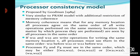The next consistency model is the processor consistency model, proposed by Goodman in 1989. It is very similar to the PRAM model, with the additional restriction of memory coherence. Memory coherence means that for any memory location, all processes agree on the same order of all write operations performed on the same memory location, and these are seen by all processes in the same order.